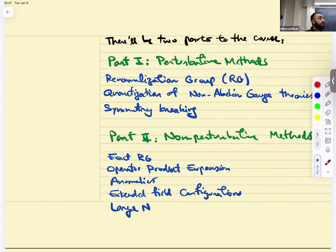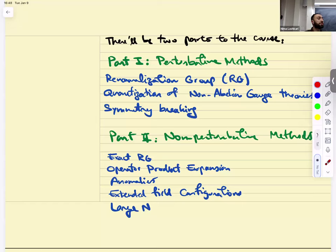There will be two parts to this course. Previously, we also had two parts: part one was classical field theory, and part two was perturbative quantization. In this course, part one we're going to continue with perturbative methods, and in part two we're going to switch to non-perturbative methods.